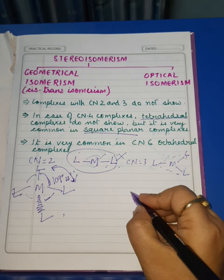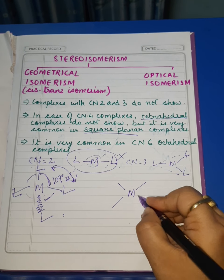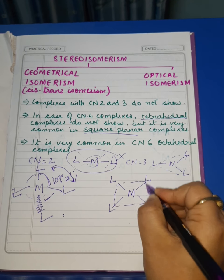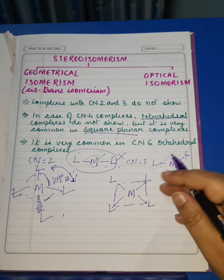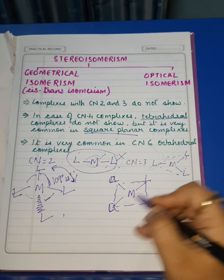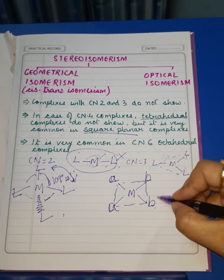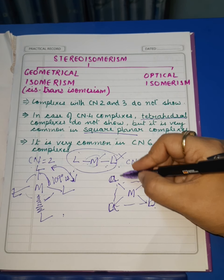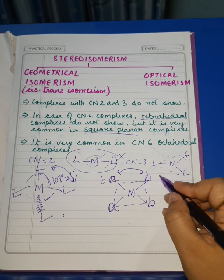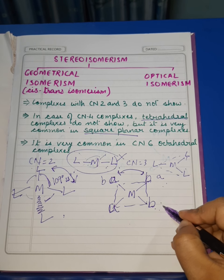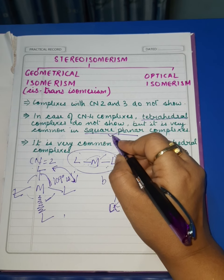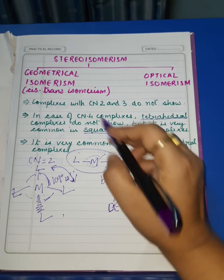In square planar complexes, the central metal atom is bonded with four ligands pointing towards the square plane. Suppose ligands A and A are on one side and B and B on the other. If we flip the positions of two ligands — B comes here and A comes there — then we can have two different cis and trans isomers. That's why square planar complexes commonly show geometrical isomerism.